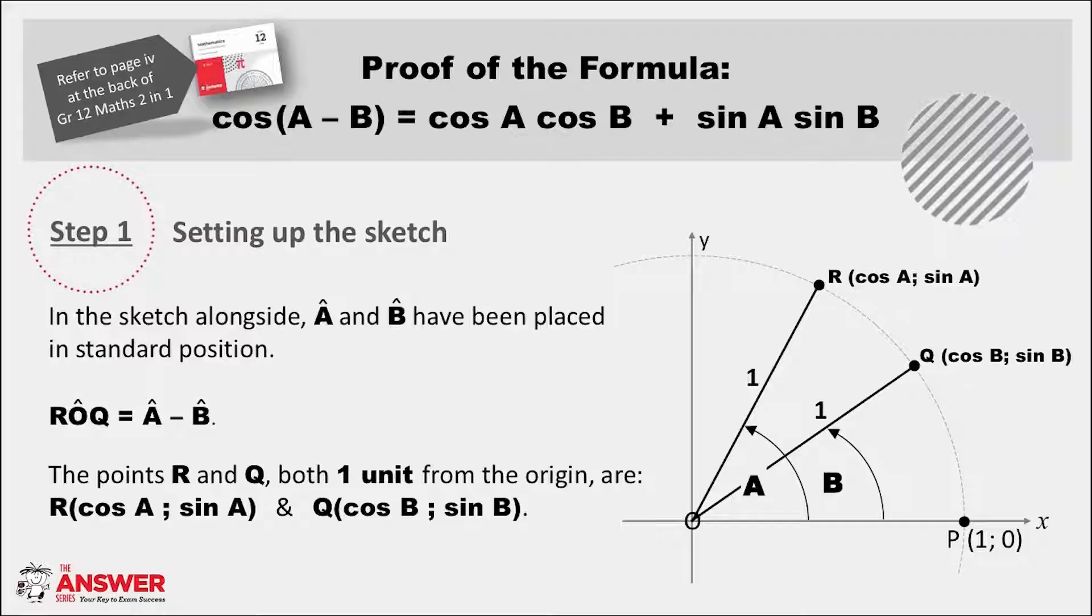We're set now to look at the proof of the formula. There are three steps to this proof. We'll start here with the first one, which is to set up a sketch. You'll see that A and B have been placed in standard position, which makes the angle ROQ equal to A minus B. And if we remember the concept we spoke about, the points R and Q, which are both one unit from the origin, have the coordinates (cos A, sin A) and (cos B, sin B).